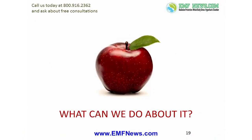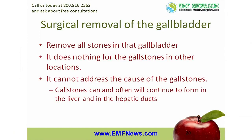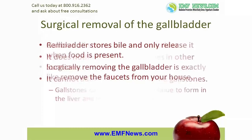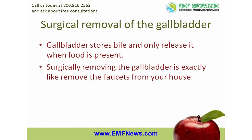Now that you know all the problems associated with biliary sludge and gallstones, what can we do about it? If the stones are large enough, your doctor may recommend surgical removal of the gallbladder. While taking out the gallbladder will rid a person of any stones that have formed there, it does nothing for the gallstones that are in other locations, nor can it address the cause of the gallstones. Even with the gallbladder surgically removed, gallstones can, and often will, continue to form in the liver and hepatic ducts because the underlying cause of the bile thickening has not been addressed. This is why some people who get their gallbladders removed find that their symptoms come back as new gallstones form in other locations.